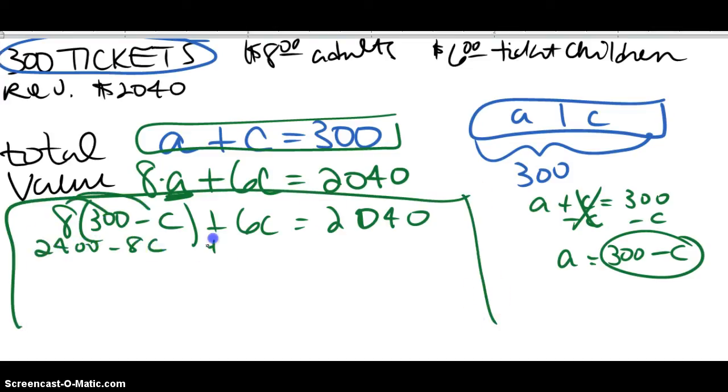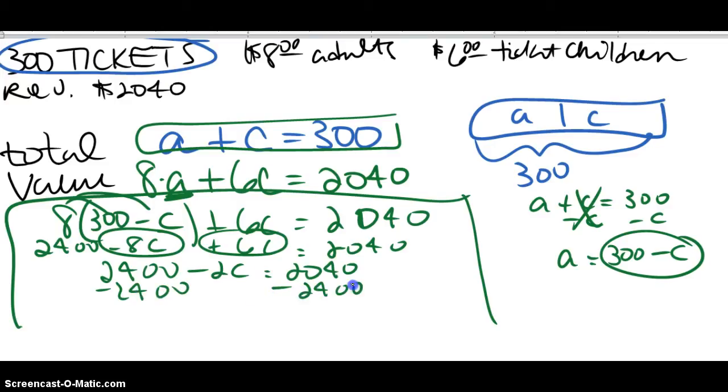Do the distributive property. So I have a negative 8C and a positive 6C, so I'm going to get negative 2C. Subtract my 2400. Those cancel. And over here, let's see, what do I get? If I subtract that, so I get 2040 minus 2400.